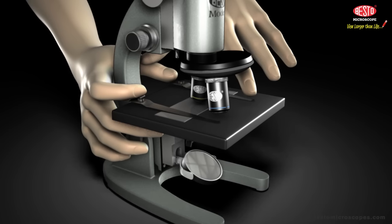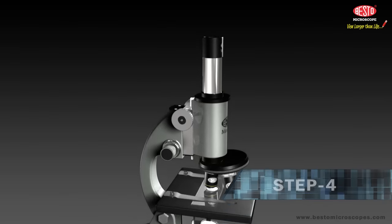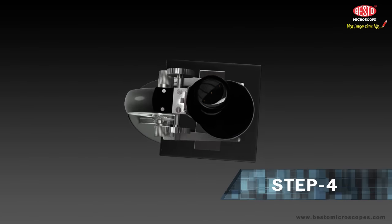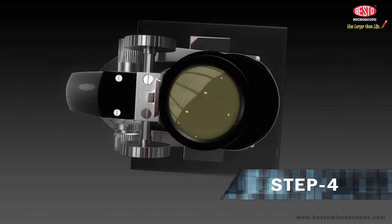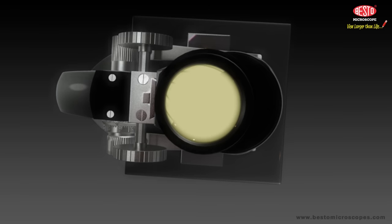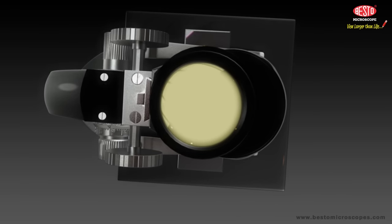Step 4: Look through the microscope. You should see a circle of light against a black background. Twist the plano-concave mirror around to make the circle as bright and even as possible.